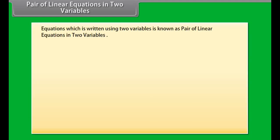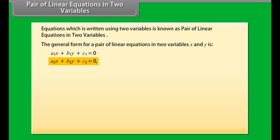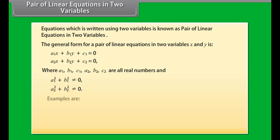Pair of linear equations in two variables. Equations which are written using two variables are known as a pair of linear equations in two variables. The general form for a pair of linear equations in two variables X and Y is: A1X + B1Y + C1 = 0 and A2X + B2Y + C2 = 0, where A1, B1, C1, A2, B2, C2 are all real numbers and A1² + B1² ≠ 0, A2² + B2² ≠ 0. Examples are: 4X − 5Y − 6 = 0 and 8X + Y + 4 = 0; X + Y = 12 and 7 = Y.